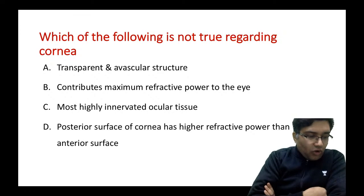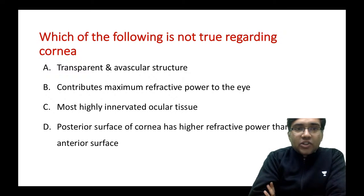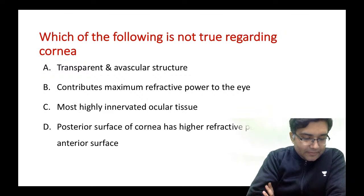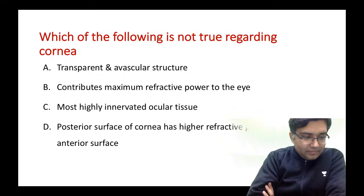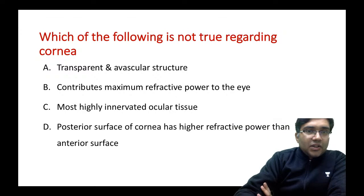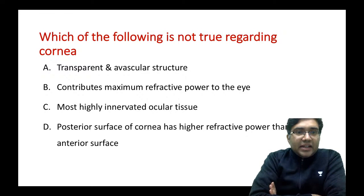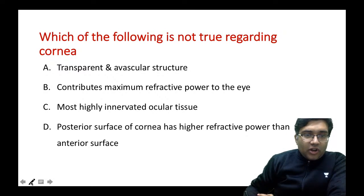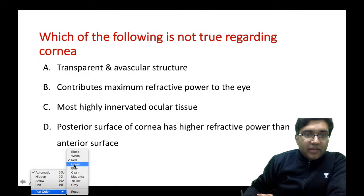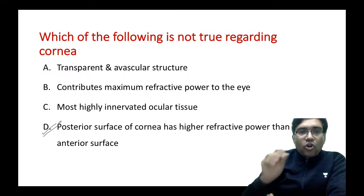The first question: which of the following is not true regarding the cornea? You have four options, try to answer in the comment section. The answer here is D — that is, the posterior surface of the cornea has higher refractive power than the anterior surface. This is the wrong option.